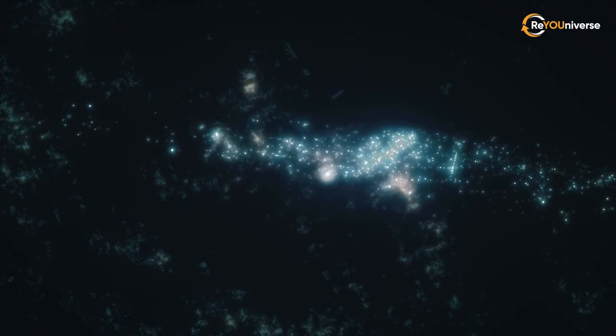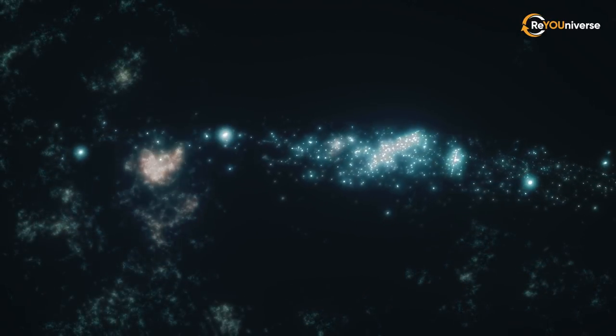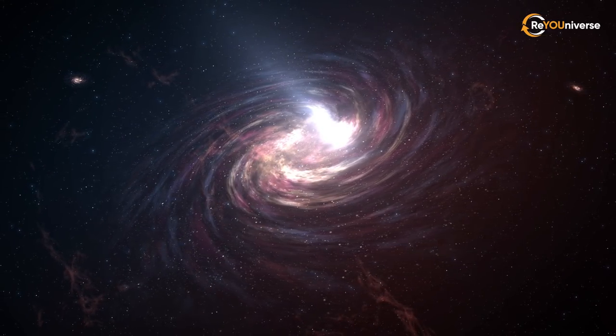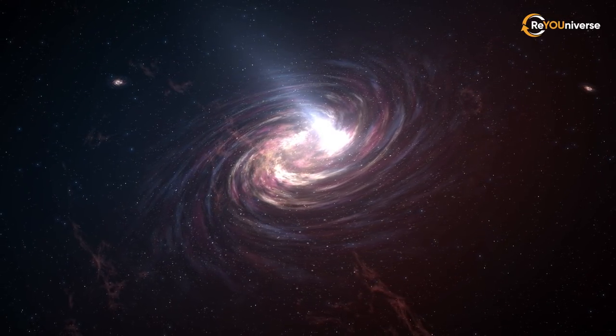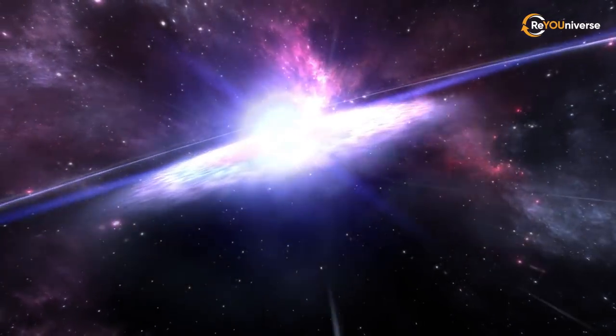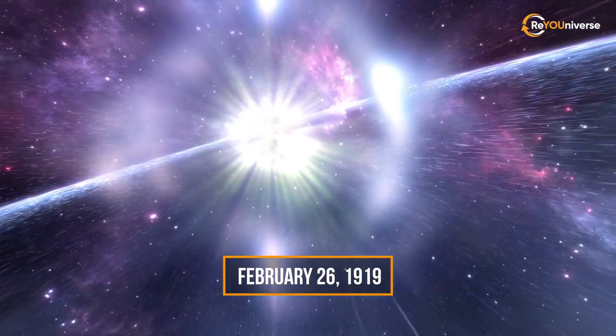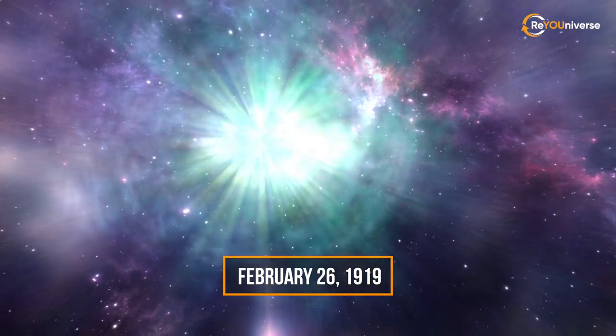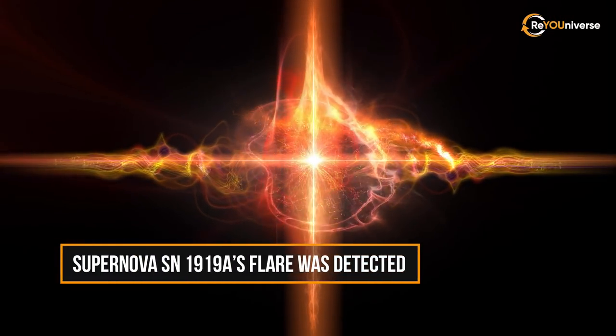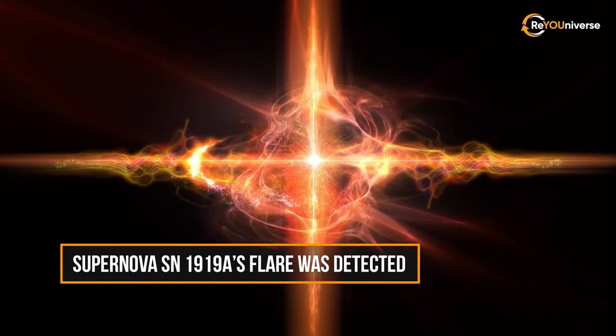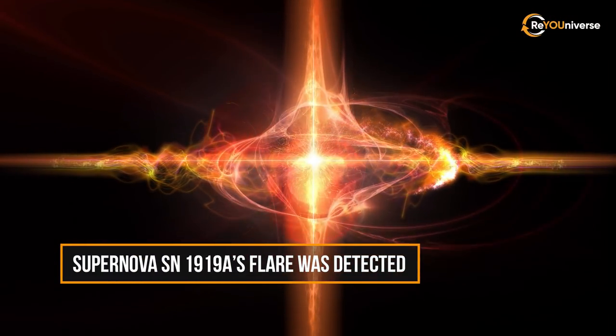Currently, M87 presents great interest for scientists because of its intensive processes, although they are not related to star formation. For example, on February 26, 1919, it was in this galaxy that the supernova SN1919A's flare was detected.